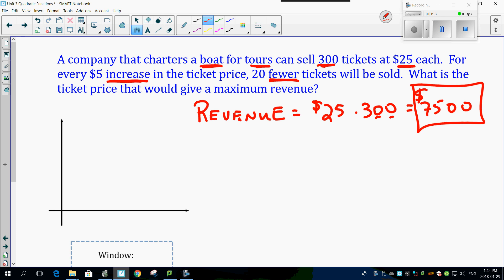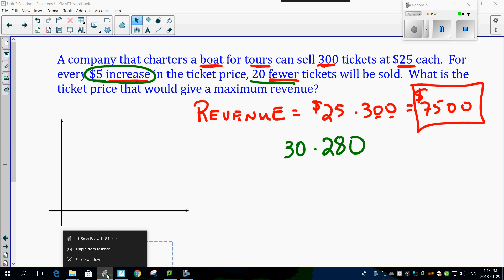Think about this. If we increase the price, you're going to sell fewer tickets. That just makes common sense. But if I increase the price by $5, so now I'm going to make this $30, I'm going to decrease the number of people by 20 fewer. So this is now going to be 280 people. I'm curious, what is 30 times 280?